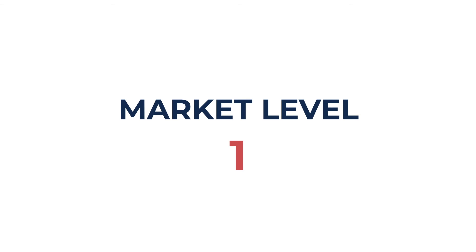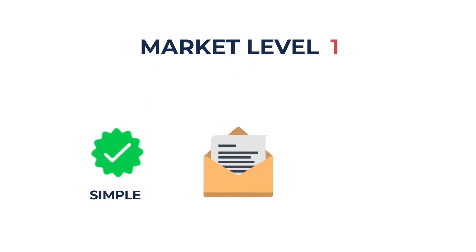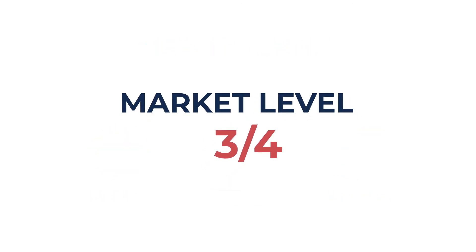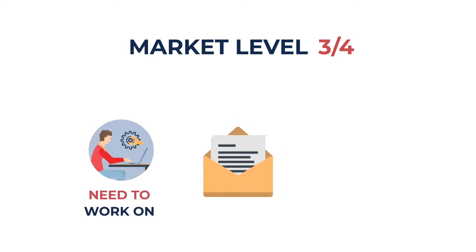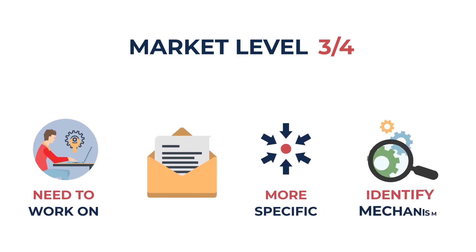If your market is at level one, your message can be pretty simple and you'll be able to focus right on scaling. However, if your market is at a three or four, your message is going to require a little more work — it needs to be more specific, you need to identify your unique mechanism, and really make sure you're nailing that messaging because your market is simply more sophisticated. Knowing what level of market sophistication you're at will also influence your ad copywriting and dictate how proactive you need to be about addressing existing objections, as well as help you set your levers depending on what other options are available among your competition.